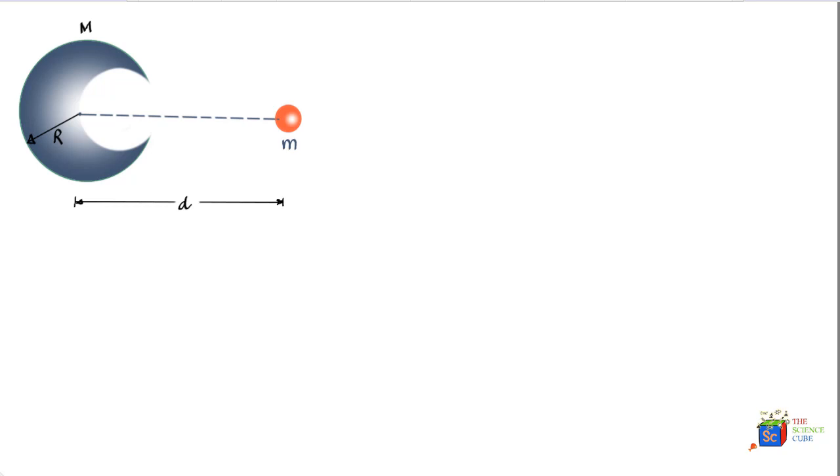So what we have in this problem is a large ball which has a cavity in it, and before the cavity was drawn the mass of this ball was capital M. The question is what is the gravitational force on account of this ball which has a cavity in it on this mass m.